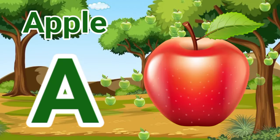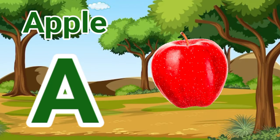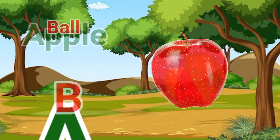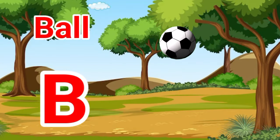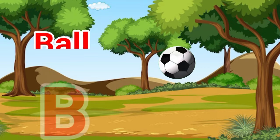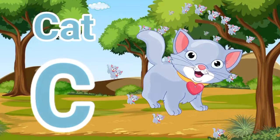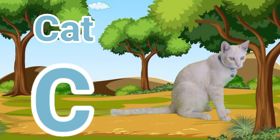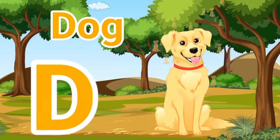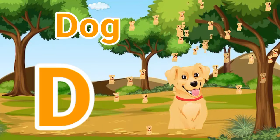A is for apple, a-a-a-apple. B is for ball, b-b-b-ball. C is for cat, c-c-c-cat. D is for dog, d-d-d-dog.